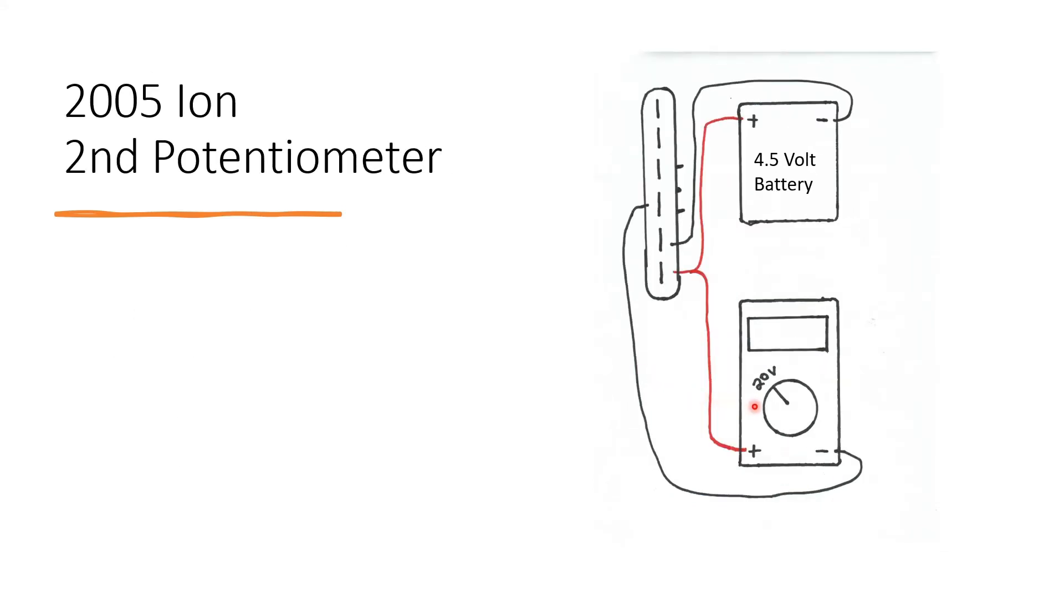The multimeter should still be set at 20 volts. The negative from the multimeter should connect to the fourth pin. The negative from the battery should connect to the fifth pin, and then the positive from the battery and the multimeter should connect to the sixth and final pin.